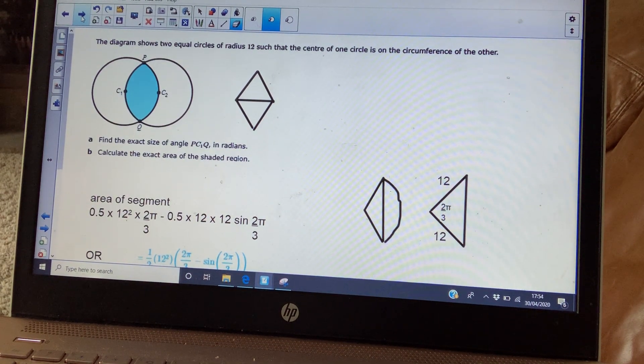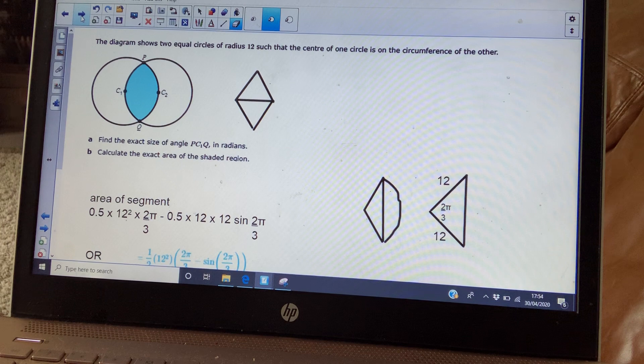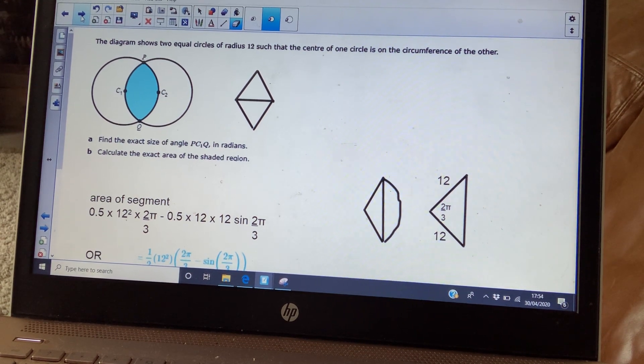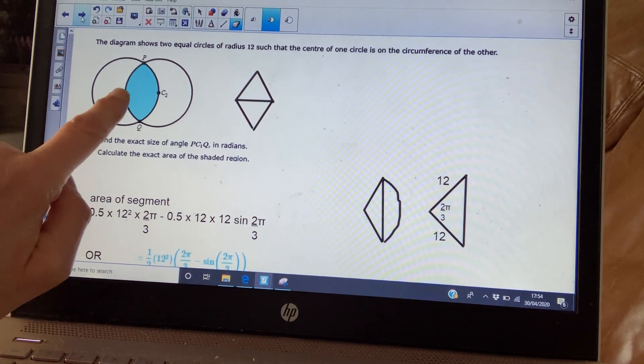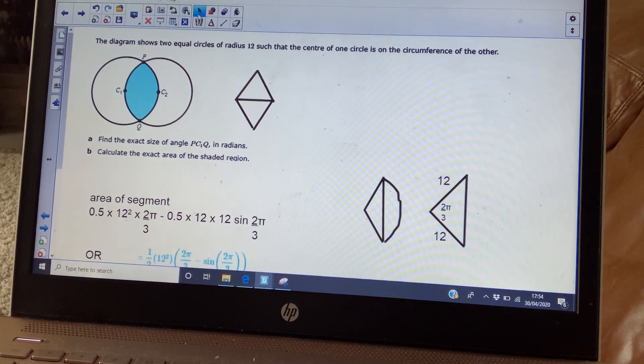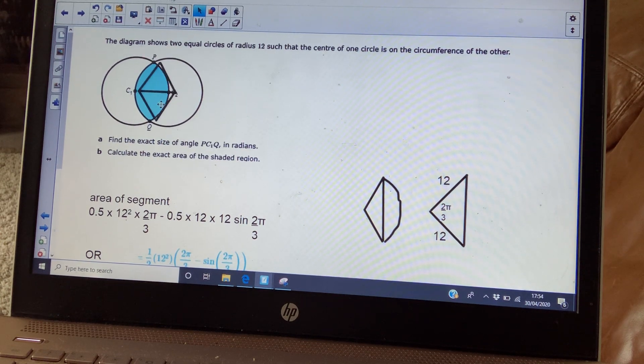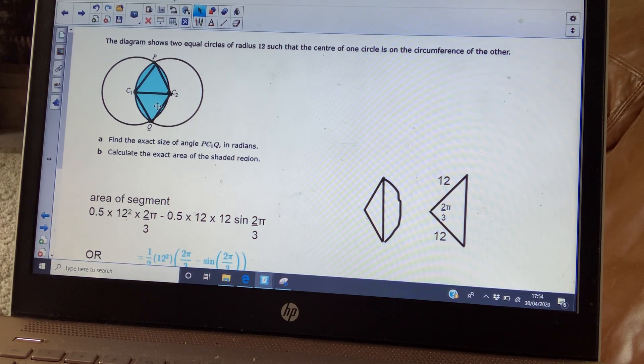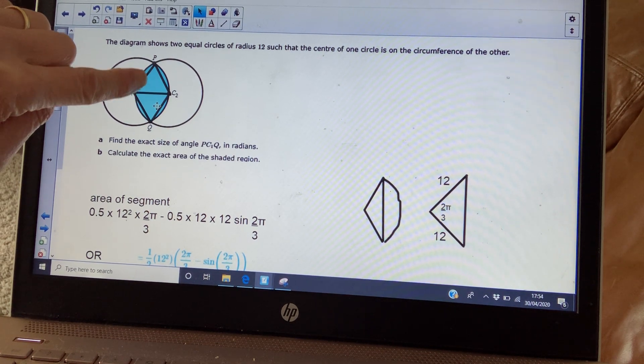Right. This is a harder question. So what you've got here, two equal circles. Each of them have radius 12. And the center of each circle is on the circumference of the other circle. So even that wording is quite tricky. But it literally means that that distance there is 12. That distance is 12. That distance is 12. So if you were to draw straight lines between all your points, you can see you've got two equilateral triangles.